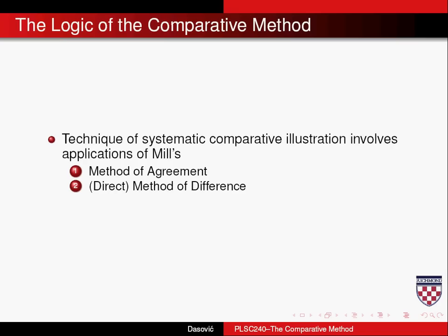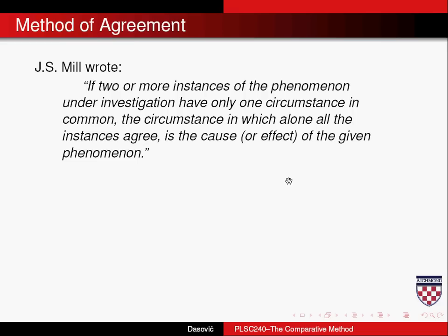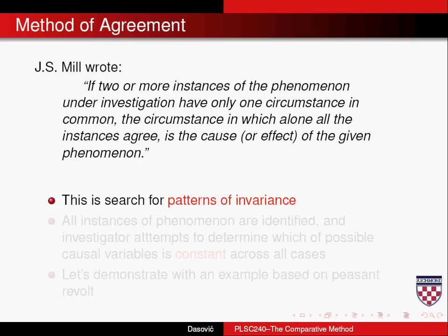In some of the more modern times, John Stuart Mill was a strong proponent of the comparative method, and he used what are called method of agreement and method of difference. There are two methods of difference, but we'll look at only the direct method of difference here. When you look at the method of agreement, you are essentially searching for patterns of invariance across potential causal effects.